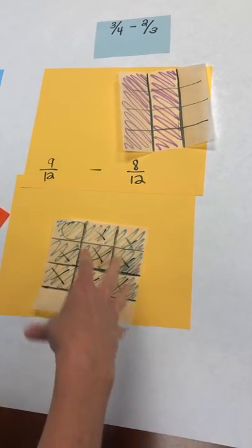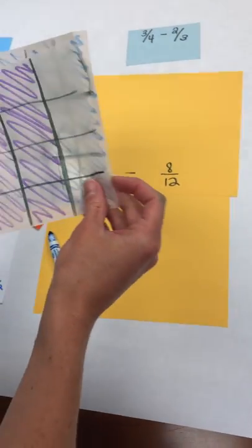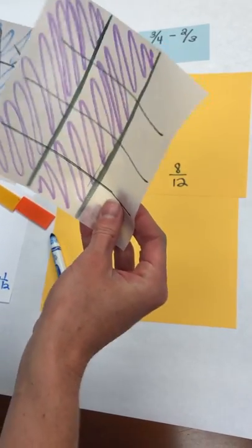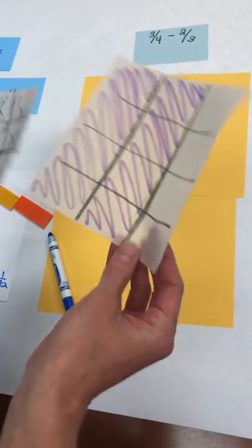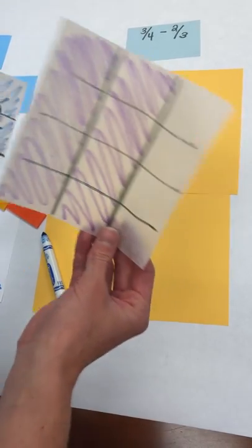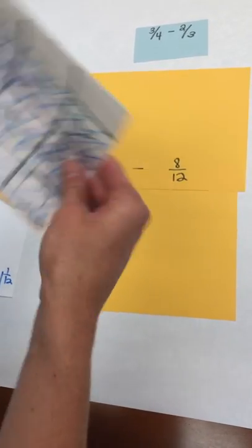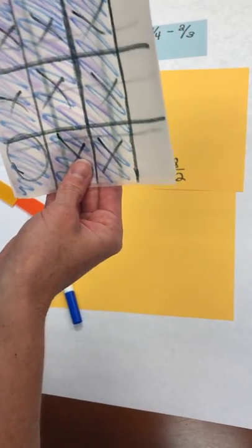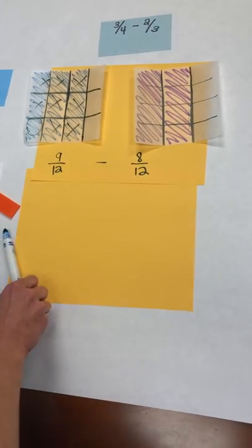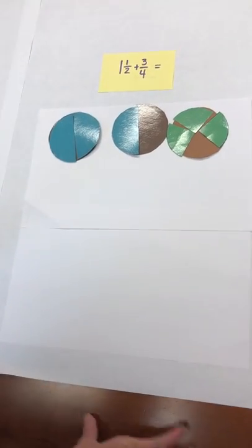One thing I want to point out here is we use a model like this where we cross over when we multiply fractions. So just differentiate when you're teaching this. You're combining or you're taking from a whole. Think about the definition of addition and subtraction, whereas when we get into multiplication we're looking at the part of the model that is shared, which means something different. Be careful if this is a model that you use to teach multiplication that you really differentiate between the meaning of addition and subtraction.